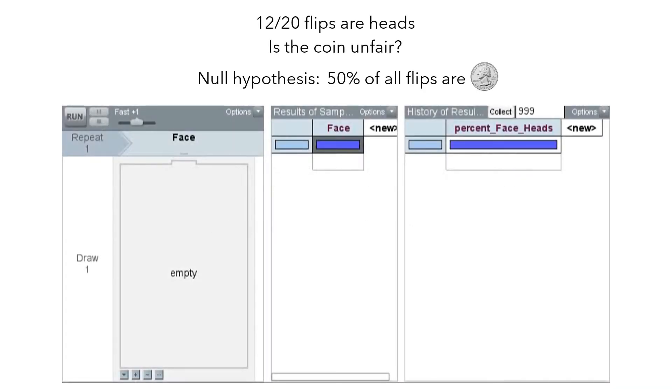So far, we have used simulation methods to make statistical inferences. For example, to determine if a coin is fair, we would set up a model, simulate flipping the coin, and then repeat this simulation many times.